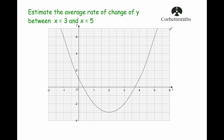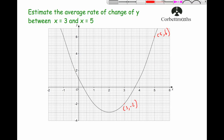Let's have a look at three typical questions. Here we've got a graph and the question says: estimate the average rate of change of y between x equals 3 and x equals 5. So let's first find those two points on the graph. Whenever x equals 3 we've got the coordinate (3, -2), and whenever x equals 5, y equals 6, so that's the coordinate (5, 6). We're going to join those two points up with a chord and work out the gradient of that line.